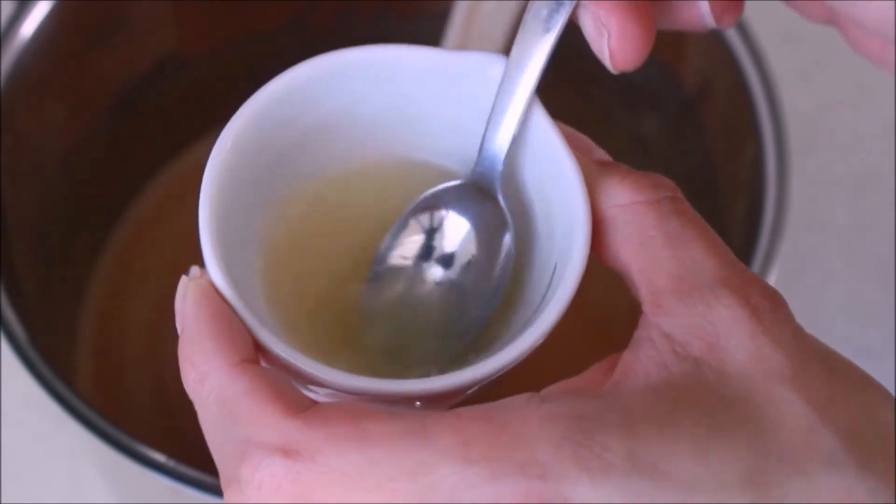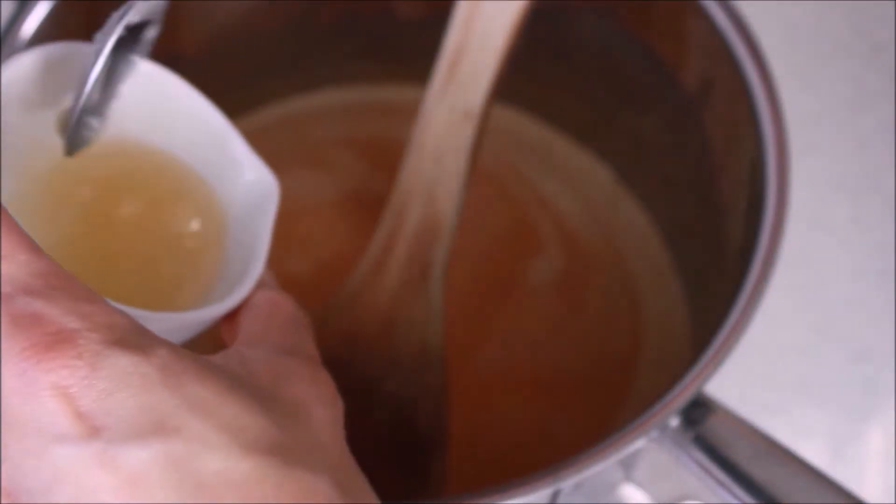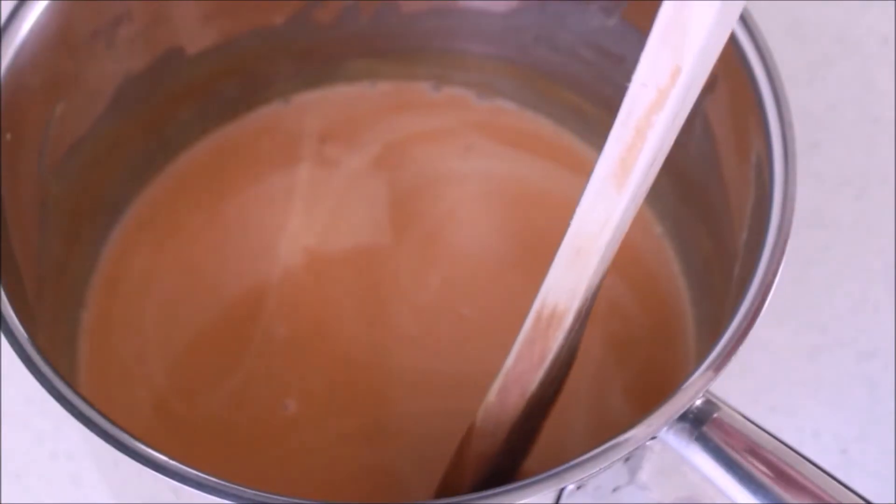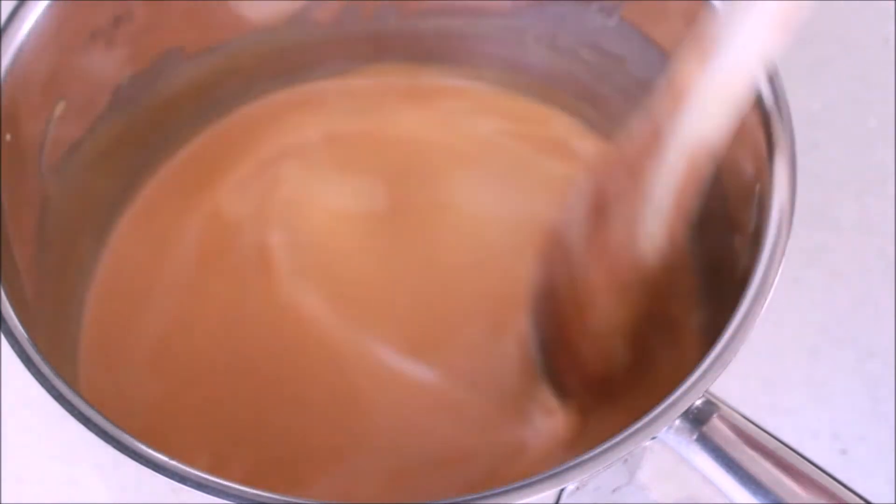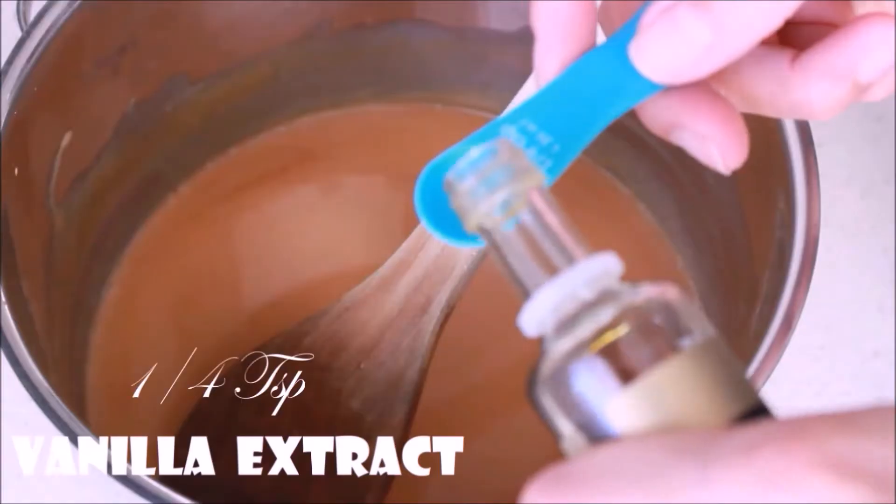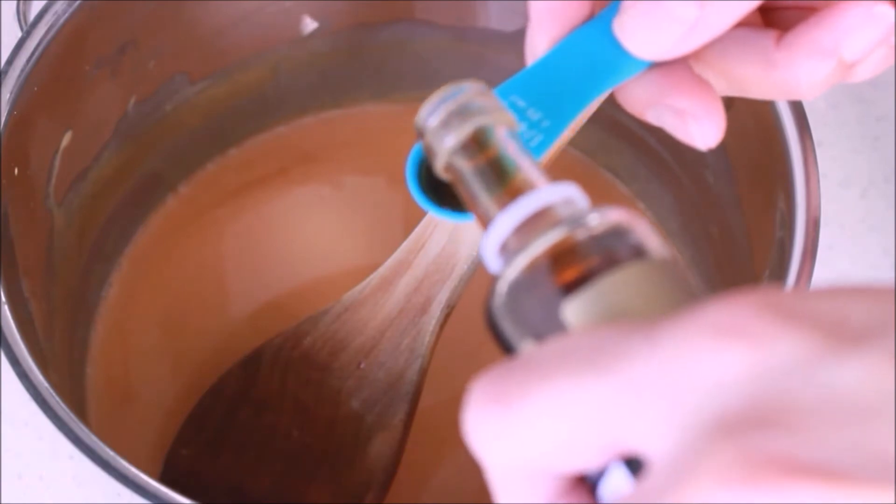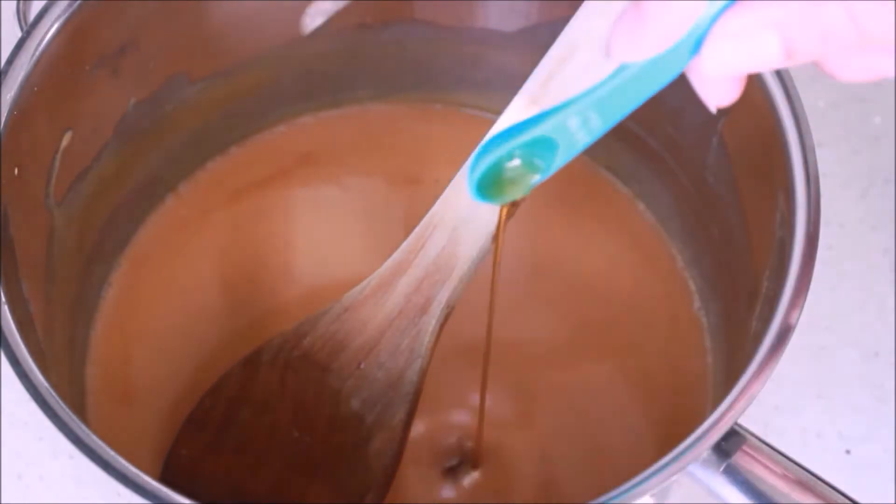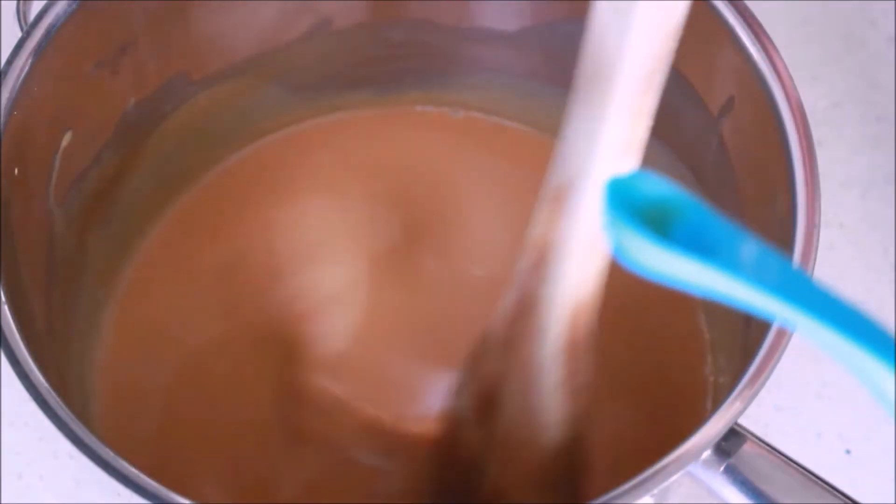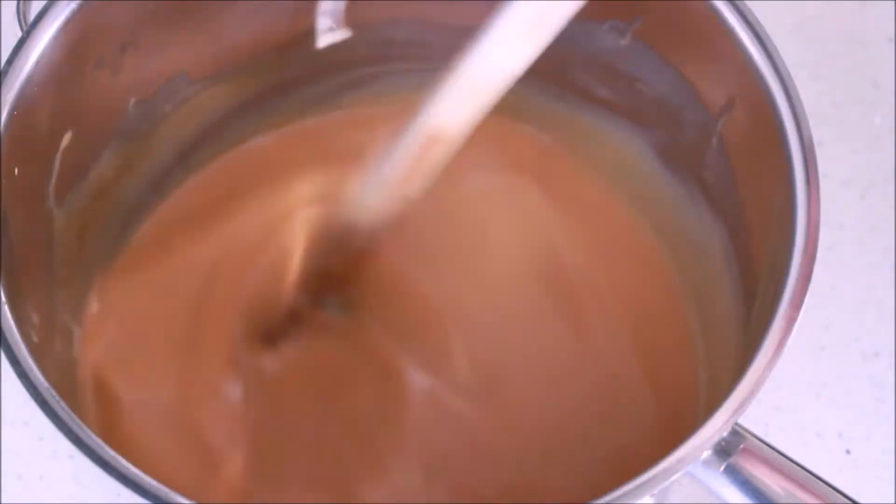Wait until the caramel cools down a little bit and then you add the gelatin, doing the same thing. Put it in the microwave for a couple of seconds before you add that in. This part is optional but I have added a quarter of a teaspoon of vanilla extract to give extra flavor.